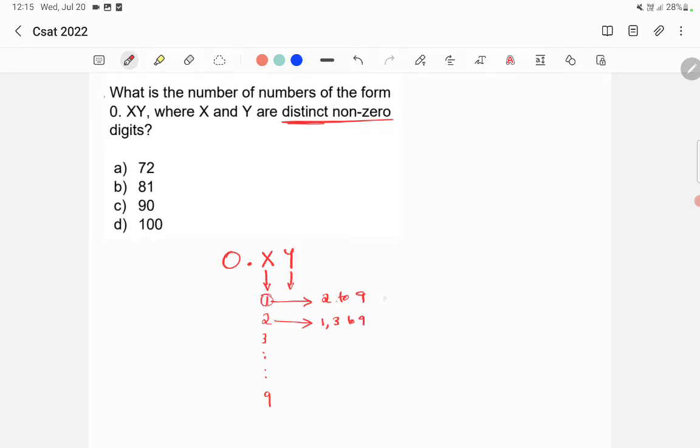So if x is 1, there are 8 possibilities, total 8 possibilities are there. If x is 2, there are 8 possibilities. Similarly, till x is 9, there are 8 possibilities.